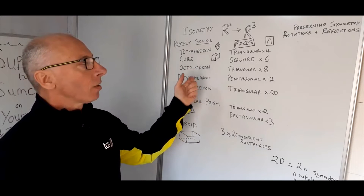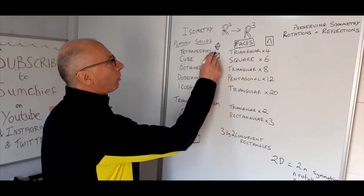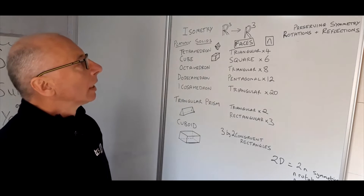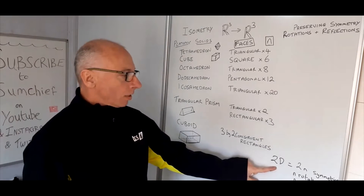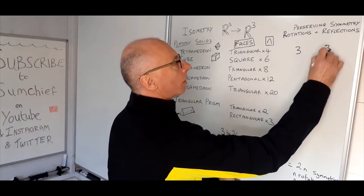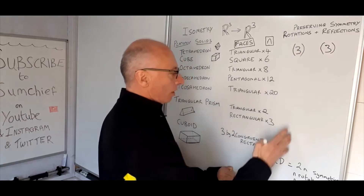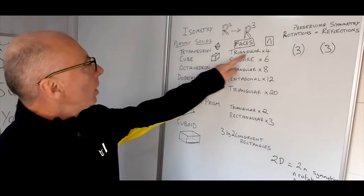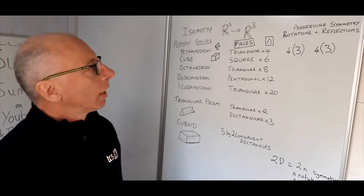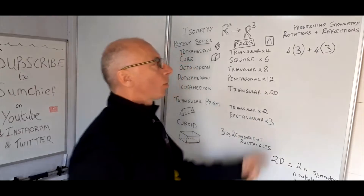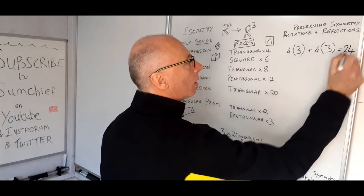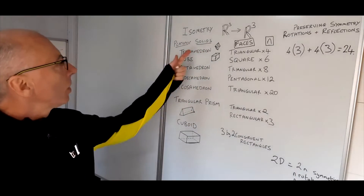For example, you could rotate the tetrahedron 180 degrees on the base and the shape would not look any different. The triangle has three sides, so we have three rotations and three reflections. The tetrahedron has four faces, so we multiply each by four: four threes are 12, plus another 12, gives us 24 preserving symmetries of a tetrahedron.